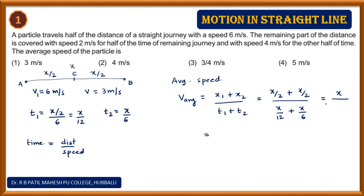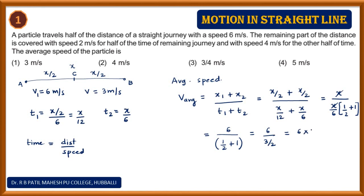Taking x/6 common from the denominator, the time expression simplifies. After cancellation, we get 6 × 2/3 = 4 m/s. So the final average velocity is 4 m/s, which is option 2.